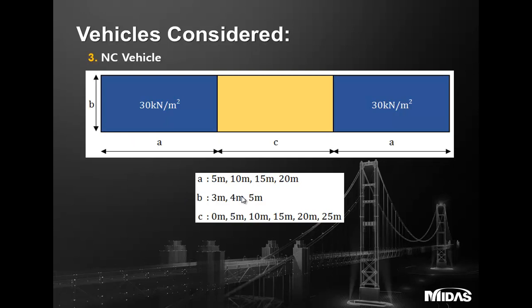Besides the standard vehicles, you can also define user-defined vehicles. For example, NB 24 and NB 36 are available, but if a client requires a different unit — say NB 40 — you can define a user-defined NB vehicle. Similarly for NC, you can change the dimensions and load intensity. You can also define a permit truck for very special vehicles. For NC vehicle, the user also has the option to consider whether the area giving the relieving effect should be included or not — for NA and NB, load giving relieving effect is to be ignored, but for NC it is user's choice.